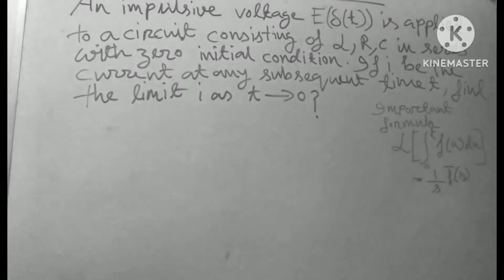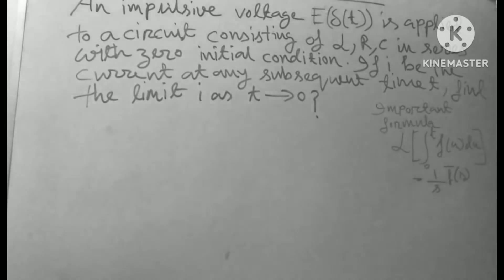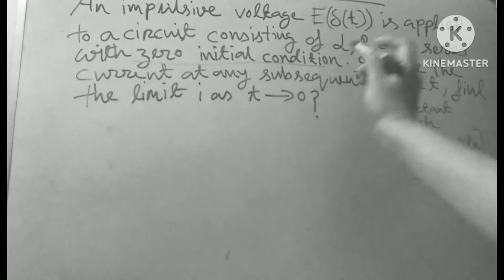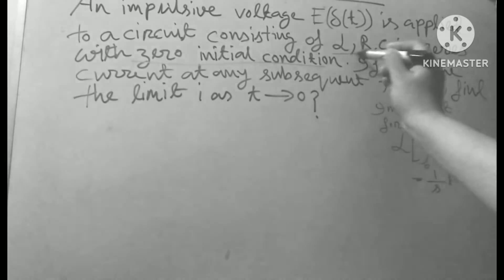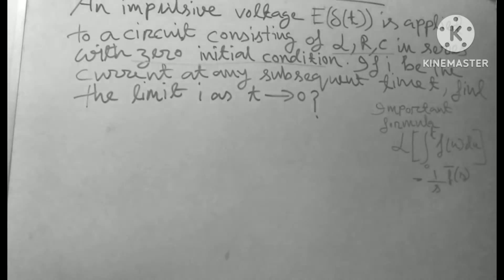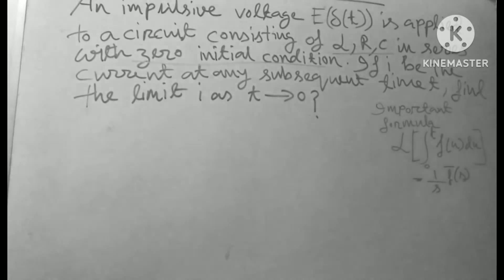An impulsive voltage E·δ(T) is applied to a circuit consisting of L, C, R in series with zero initial conditions. If I is the current at any subsequent time T, find the limit of I as T tends to 0.